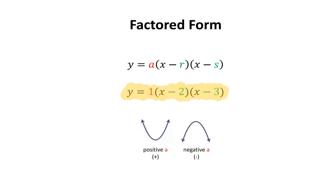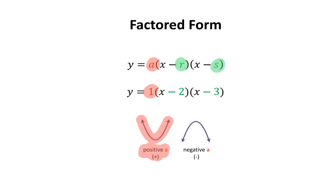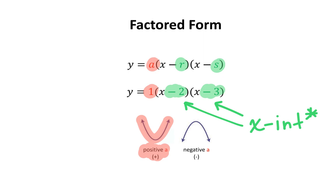Below, you'll see an equation of a quadratic relation in factored form. The variable a is positive 1, so the parabola is smiling or opening upwards. Variables r and s are negative 2 and negative 3. When determining the x-intercepts, you need to change their signs — so it's no longer negative 2, it's positive 2, and no longer negative 3, it's positive 3. Therefore, the x-intercepts are positive 2 and positive 3.